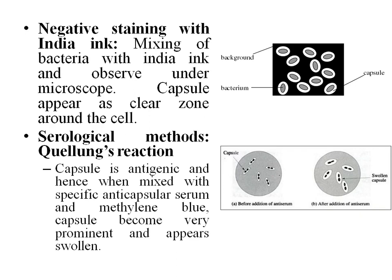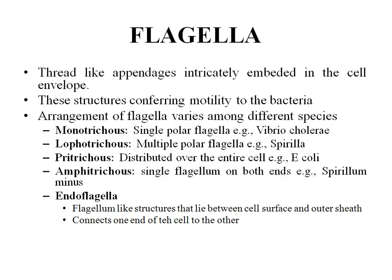It looks like a starry sky appearance. There are other indirect methods of demonstration of the capsule. One such method is the Quellung reaction, which is most often asked as a three-marks question. The capsule is antigenic, so antibodies are produced against it — we call this the anti-capsular serum. When we mix a suspension of encapsulated bacteria with its corresponding anti-capsular serum and add a dye like methylene blue, the capsule becomes very prominent, swells, and takes up the stain. This is called the Quellung reaction, also known as the swelling reaction.